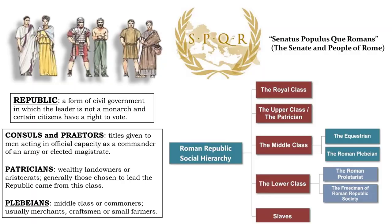Prior to beginning a discussion about the importance of the Punic Wars, or wars between Rome and Carthage, I wanted to lay some foundational work by looking at Roman civilization and society more generally. For roughly the first 500 of what would be almost a thousand years of rule in ancient Rome, that first 500 years is referred to as the period of Republic. A republic is a form of government whereby only certain individual citizens have a right to vote, usually based on property requirements.